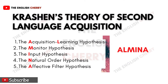Here is a trick to easily remember the sequence of the five hypotheses: just recall 'ALMINA.' AL stands for the acquisition-learning hypothesis, M for the monitor hypothesis, I for the input hypothesis, N for the natural order hypothesis, and A for the affective filter hypothesis.